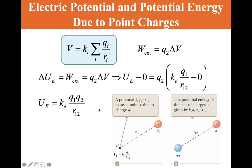The change in electric potential is equal to the external work, which is equal to q₂ delta V, and that's Uₑ minus zero. We're taking the reference point to be zero, is equal to kₑ q.